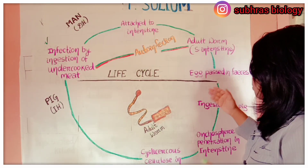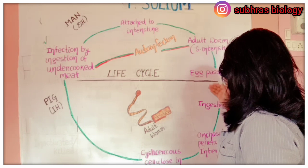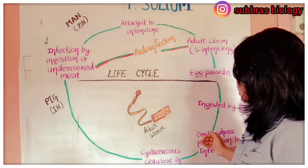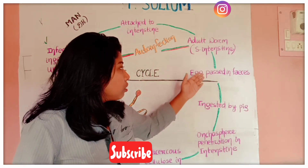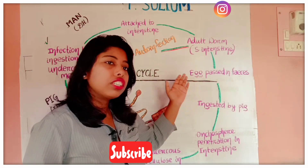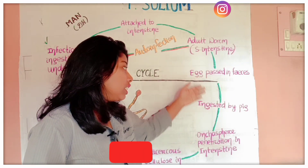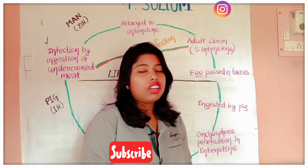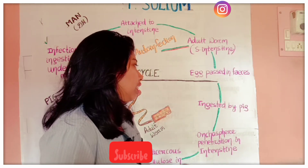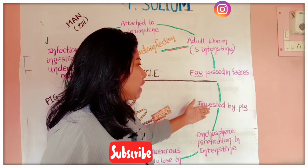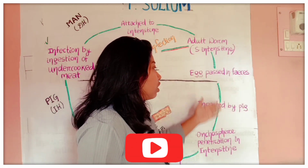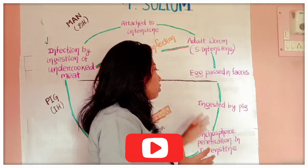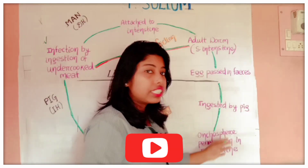The feces containing the eggs of Taenia solium are ingested by the pig — because as you know, the pig eats the stool or feces of humans. So this pig, by taking the feces which contain the eggs of Taenia solium, gets infected.